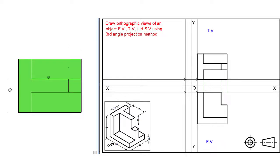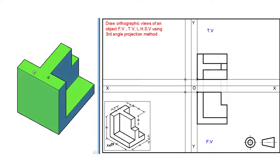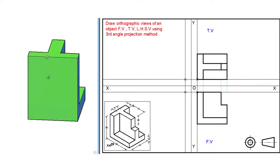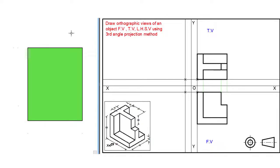Now to draw a left hand side view, let us observe the left hand side view of the given 3D object with respect to direction of view. As we know, in the case of third angle projection method, we have to draw the left hand side view at the left side of the front view. For that, we have to transfer the projections of the top view.